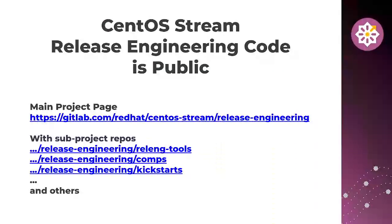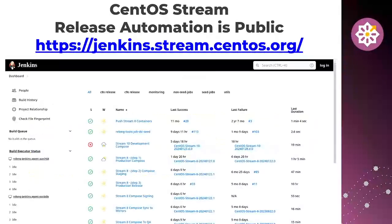Many people don't know that our release engineering code is public. This is the CentoStream release engineering team — doing our composes. We've got comps, kickstarts, release engineering tools: scripts for how we make our containers, how we make our AWS images. It's all right there. Our automation is also public — this is a Jenkins instance. Just so you know, you can see everything but you can't log in.